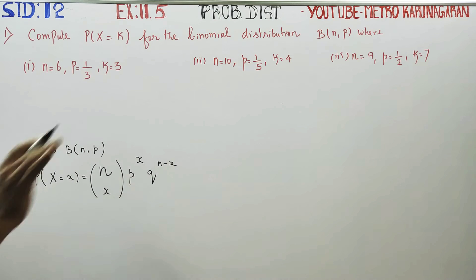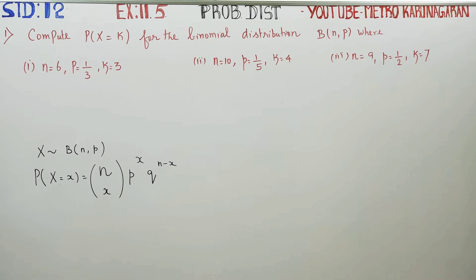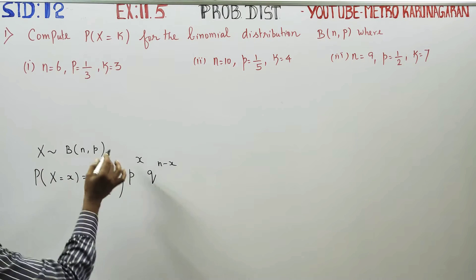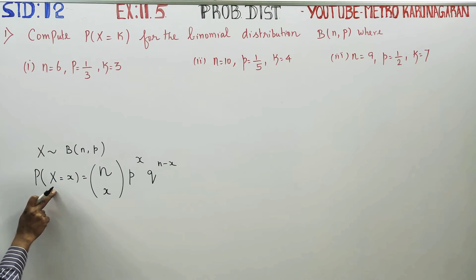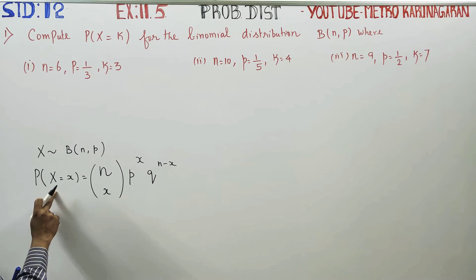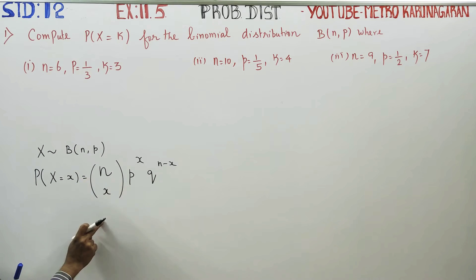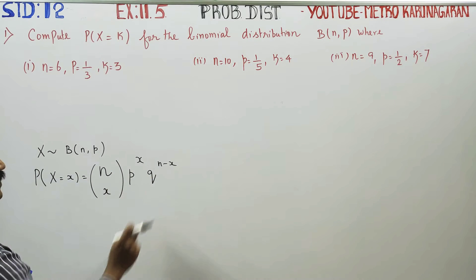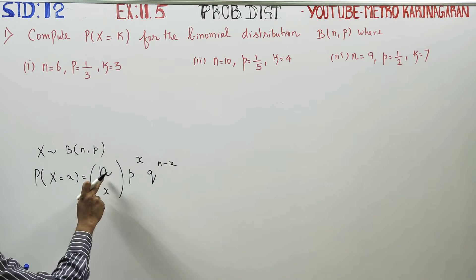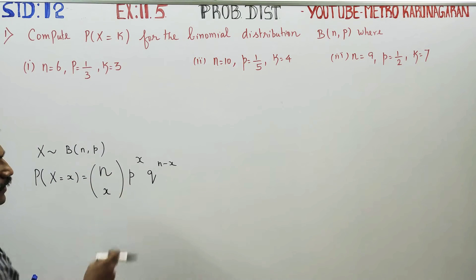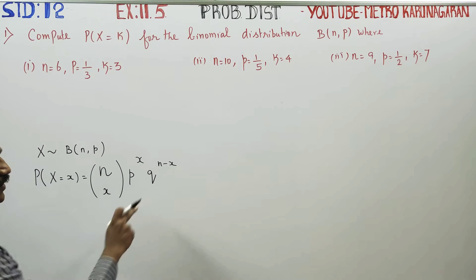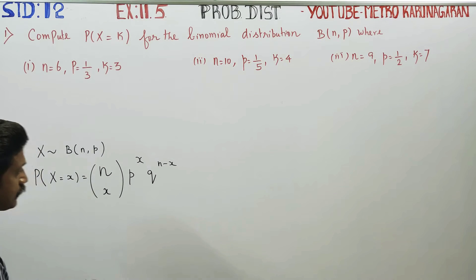We will use the binomial distribution formula. To find the probability: nCx * p^x * q^(n-x), where n is the number of times the experiment is repeated, p is the probability of success, and q is the probability of failure.